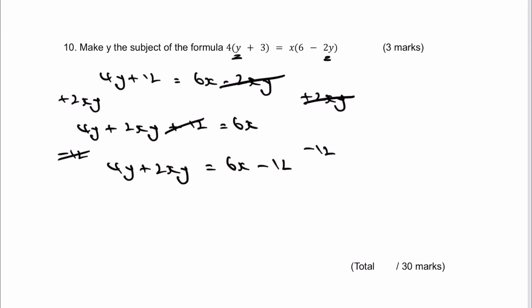With this sort of grade 6 question, you need to be comfortable also with factorizing. I'm going to rewrite 4y plus 2xy as a factor of y. So it's going to be y times 4 plus 2x. That gives me the ability then to divide both sides by 4 plus 2x, and I'm going to get y as the subject of my formula, which is 6x minus 12 all divided by 4 plus 2x. That would be the answer to this particular question and the end of the worksheet.